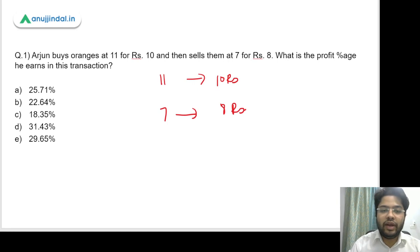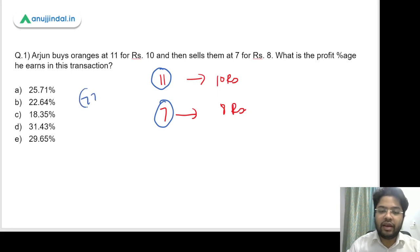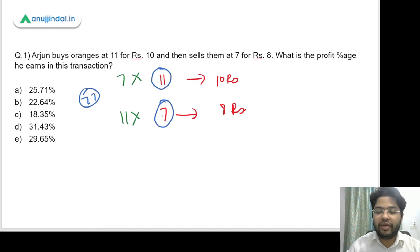So how do we solve this? What we can do is find a common value at which we can calculate the cost price and selling price. Since the numbers are 11 and 7, we take their LCM. Their LCM would be 11 into 7, that is 77. To achieve 77, if we multiply 11 by 7 and 7 by 11, we get 77 both ways. So 77 oranges would cost 10 into 7, that is 70 rupees.